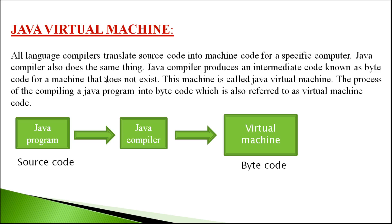Java compiler also does the same thing, but in other words, the Java compiler produces an intermediate code known as byte code for a machine that does not exist. So again, the Java compiler manages intermediate code — that means byte code is not machine code. Byte code according to this machine is called Java Virtual Machine. The process of compiling into byte code, which is also referred to as Java Virtual Machine code.